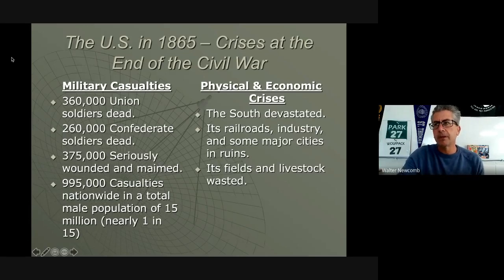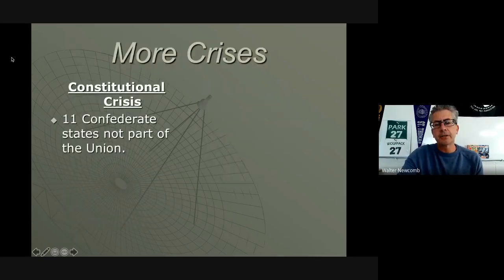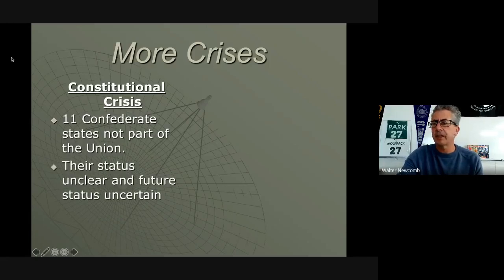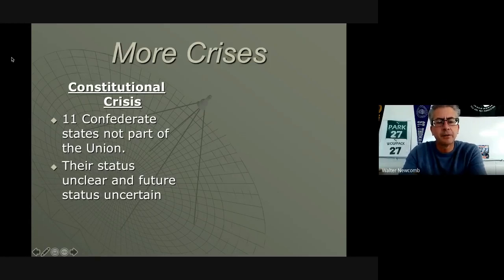We look at the physical and economic crisis: the South is completely devastated. Its railroads, industry, and major cities like Richmond, Atlanta, Birmingham, New Orleans, and Memphis are in ruins. Fields and livestock are wasted — especially in Georgia with Sherman's Atlanta campaign, which brought utter destruction. If they couldn't take it, they destroyed it, killed it, burned it. Constitutionally, there's the question of what to do with 11 Confederate states, whose status and future are uncertain.